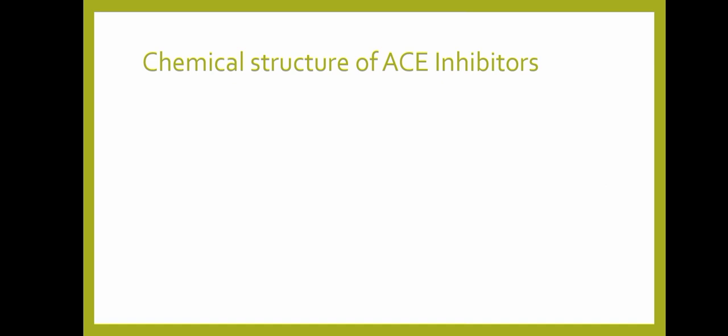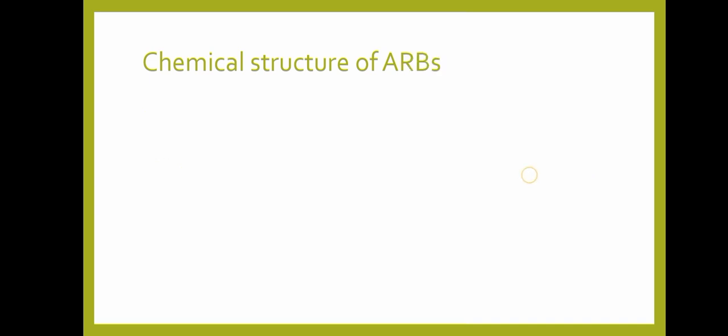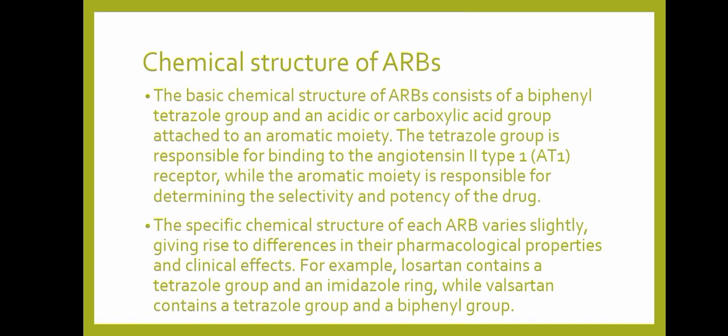Chemical structure of ACE inhibitors. ACE inhibitors are a class of medications with a similar chemical structure. They are all peptides or peptide derivatives and contain a carboxyl group and an amino group. The basic chemical structure consists of a proline or a derivative of proline, such as in captopril or enalaprilate, linked to a carboxyl terminal acidic group. This group is responsible for binding to the active site of the ACE enzyme, blocking its activity.